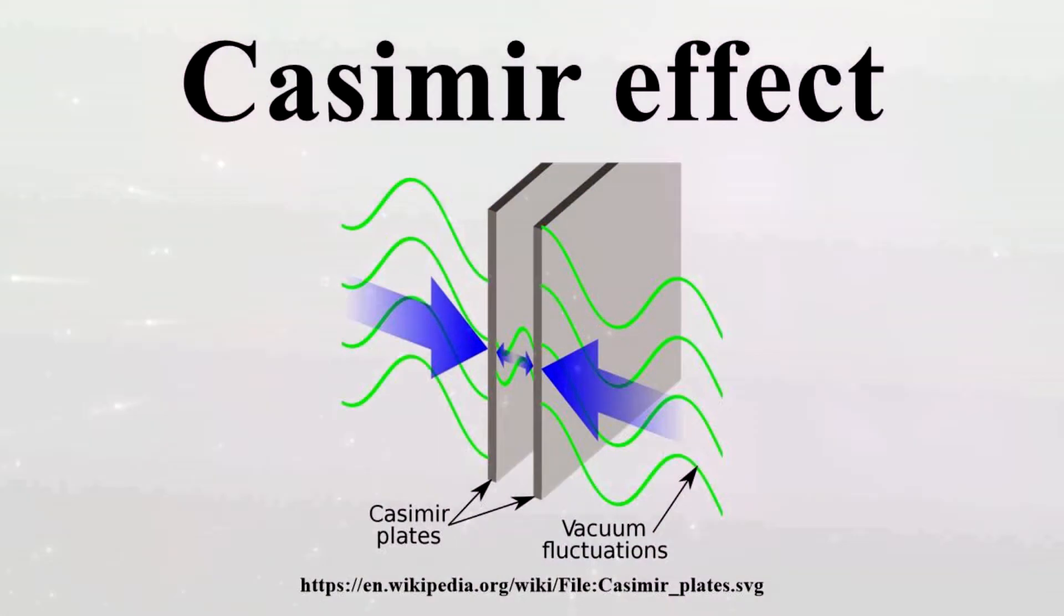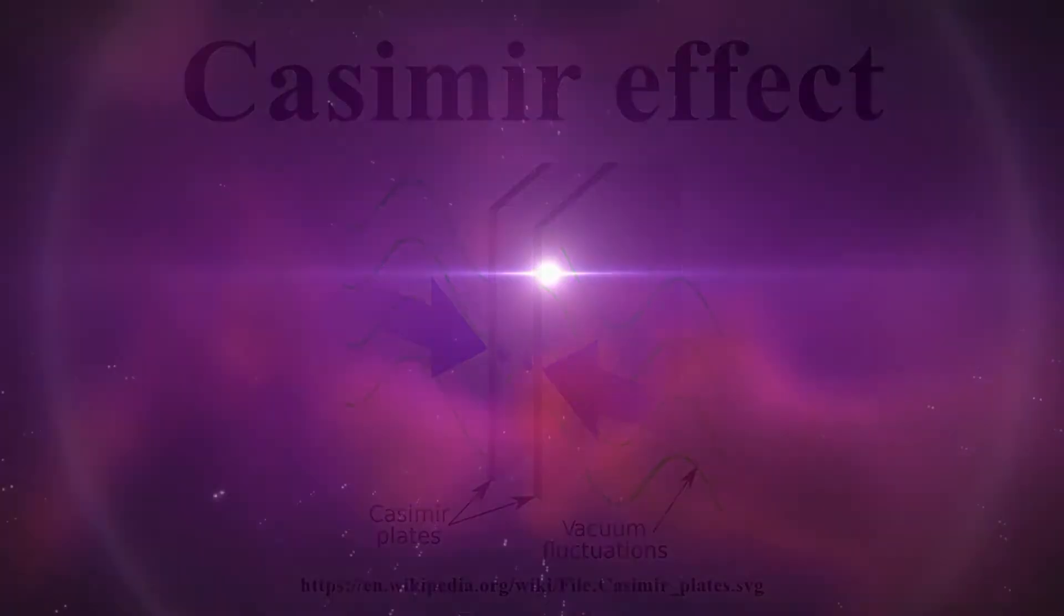Well, there is actual experimental evidence of this, called the Casimir effect. If you put two thin plates of metal really close together, enough to restrict some of the larger particles from popping into existence between them, they will forcefully get pushed together. That's because you're creating a pressure differential between outside the plates and the inside of the plates. More bigger particles can spawn in on the outside of the plates, now creating a bigger pressure than the inside and forcing them to close. I mean, unless a ghost is doing it, it has to be virtual particles.